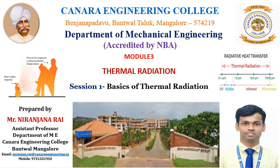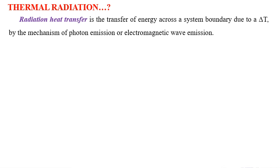Thermal radiation, or radiation heat transfer, is the transfer of energy across a system boundary due to a temperature difference delta T, by the mechanism of photon emission or electromagnetic wave emission. This thermal radiation is a distinct, separate mechanism from conduction and convection for the transfer of heat energy.